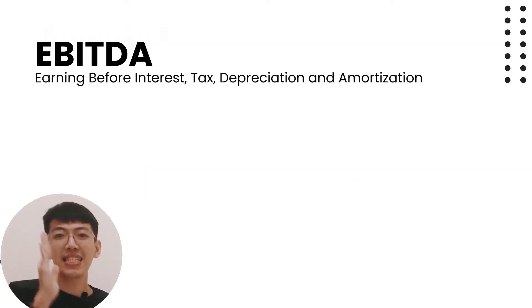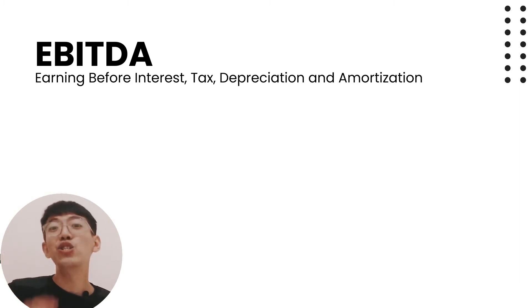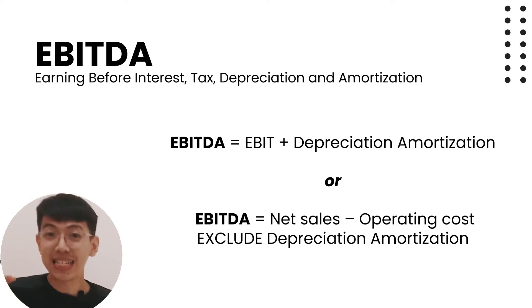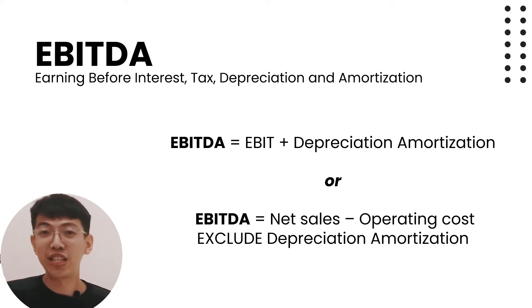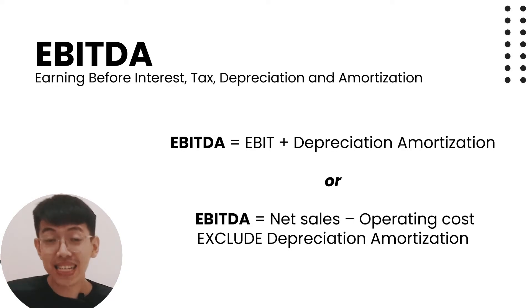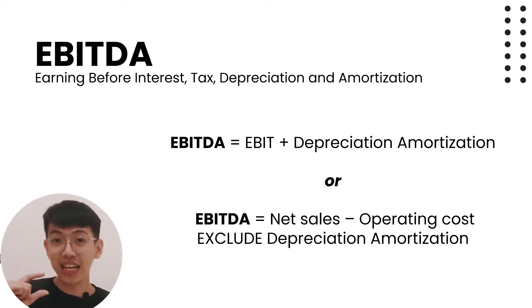There is another term called EBITDA — Earnings Before Interest, Tax, Depreciation, and Amortization. EBITDA equals EBIT plus depreciation and amortization. Alternatively, EBITDA equals net sales minus operating cost excluding depreciation and amortization.